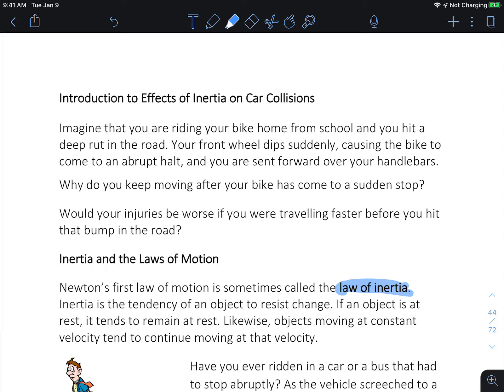Whenever we are brought to an abrupt halt, typically the vehicle gets brought to an abrupt halt. For example, if you're riding your bike home from school and you hit a deep rut in the road, your front wheel will dip suddenly, the bike will come to an abrupt halt, and you'll be sent forward over your handlebars.